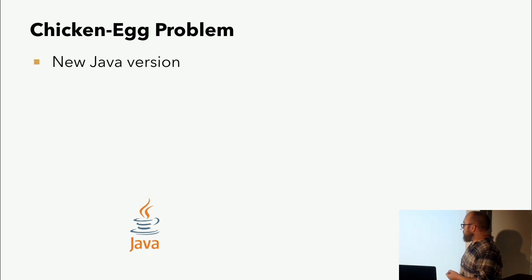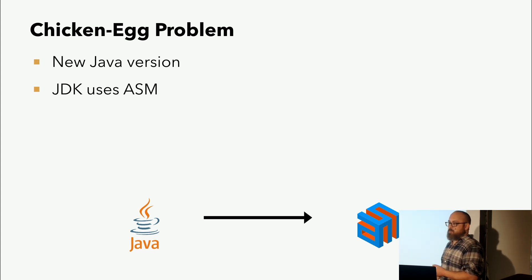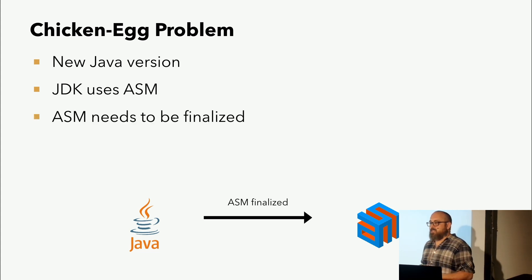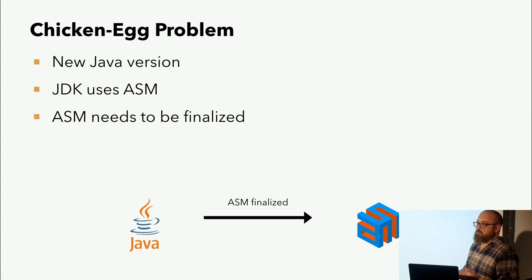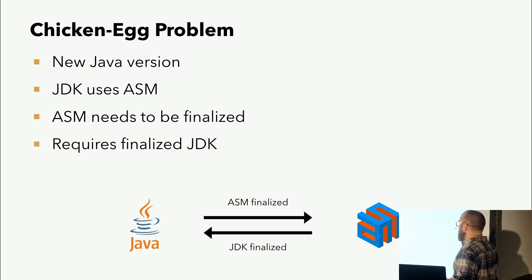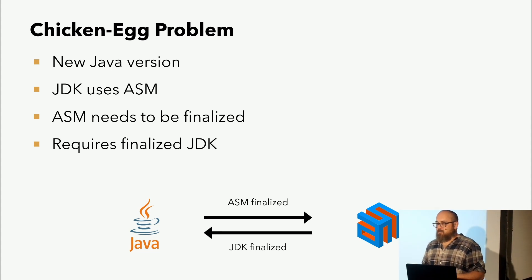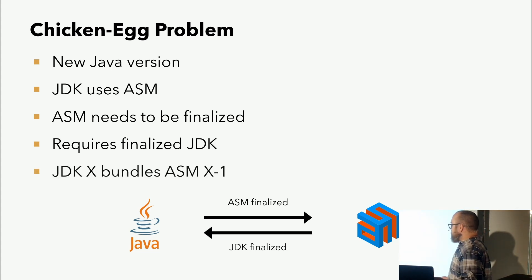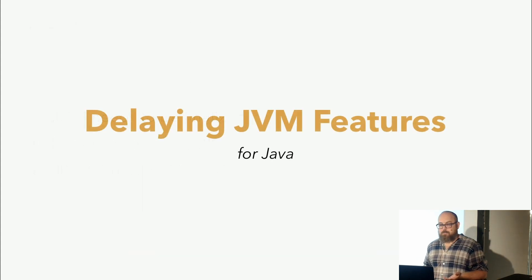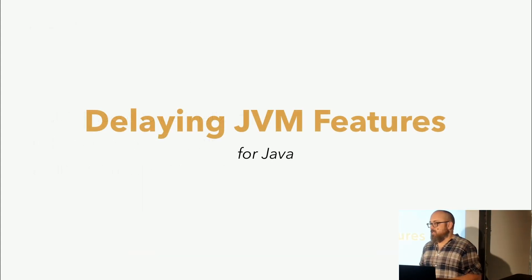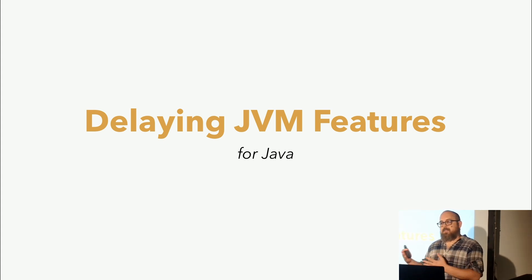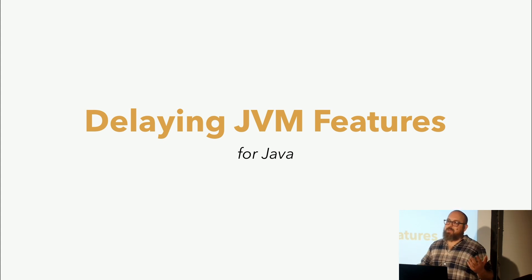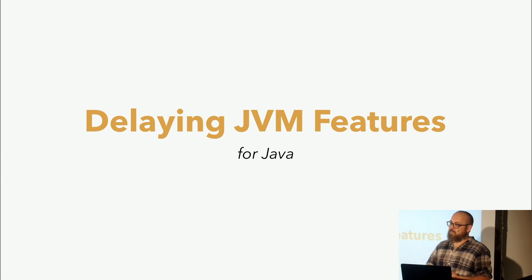Es wird an einer neuen Java-Version gearbeitet. Das JDK benutzt ASM für diverse Dinge: im Compiler, in ein paar Tools, für manche Lambda-Sachen. Das bedeutet aber, ASM muss in einer fertigen Version vorliegen. Das JDK wird keine Vorab-Version von ASM benutzen – das ist ein viel zu großes Risiko. Das Problem ist aber, dass ASM ein fertiges JDK mit fertigen Bytecode-Spezifikationen für diese Version braucht, weil es auch nicht auf eine Vorab-Version des JDK aufbauen kann. Das JDK für eine Version kann also nur ASM aus einer Version niedriger benutzen. Das wiederum führt dazu, dass wir in Java auf JVM-Features warten müssen. Der Bytecode ist schon da, der Bytecode ist spezifiziert, aber ASM kann es nicht. Also kann der Java-Compiler eigentlich seinen eigenen Bytecode nicht generieren für ein Feature. Also verzögert sich das Feature bis zur nächsten Version.